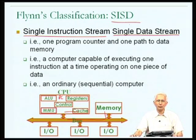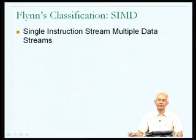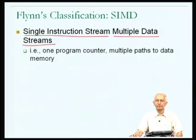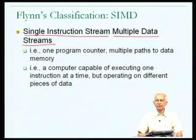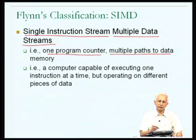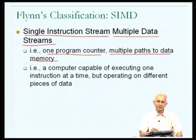That leaves two elements in Flynn's classification: SIMD and MIMD. An SIMD computer has a single instruction stream and multiple data streams — one program counter but multiple paths to data memory. With only one program counter, only one instruction can be executed at a time. However, the parallelism comes from multiple data streams, meaning the one instruction is being executed on different pieces of data simultaneously. That is where the parallel aspect of the architecture comes in.